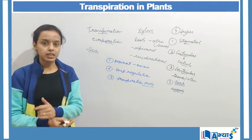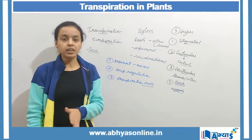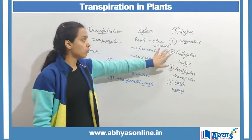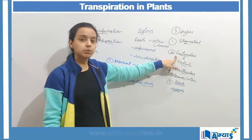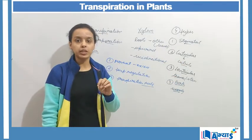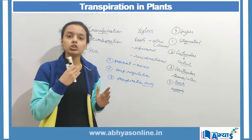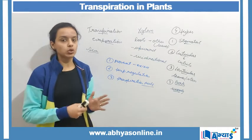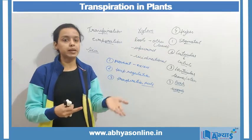To summarize: transpiration is the removal of excess water from the surface of leaves. Its functions include removing excess water, temperature regulation in the plant, and enabling the transpiration pull in tall trees. The four types are stomatal transpiration — the maximum — followed by cuticular and lenticular transpiration, which are minimal, and bark transpiration, which occurs only in woody plants. For more detail, refer to the video on xylem, an important concept in water transportation.